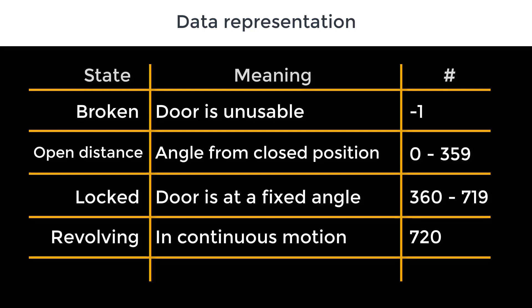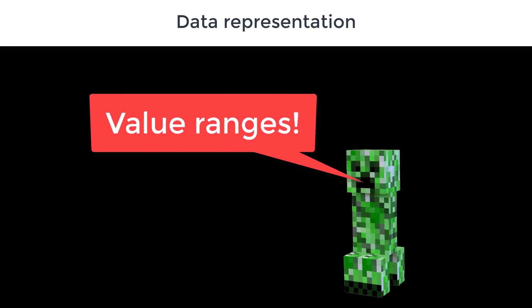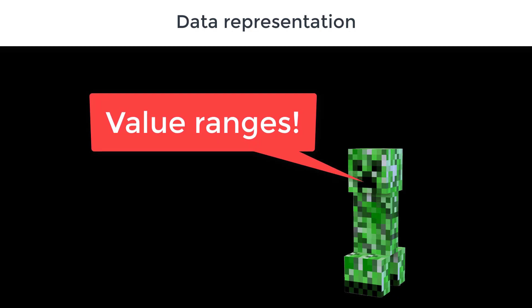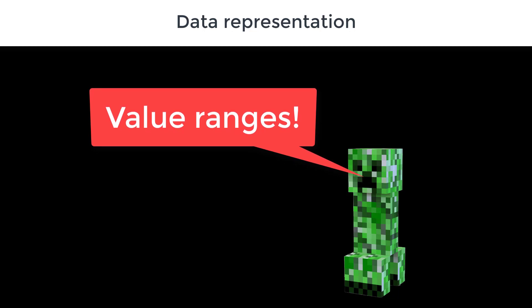So for example, we have broken, meaning the door can't be used. We might represent that with the number minus 1. And we might also have an open distance, which could be the angle in degrees from 0 to 359 inclusive, representing the angle with which the door is open. And then we could have a second range from 360 to 719, which we interpret as being the angle which the door is open, but the door is also locked in that position. So for example, if the door is locked, represented by 360, then we could say it's locked closed. Here we can see that we can use ranges of numbers to represent a range of states of the door without having to say what each individual number represents.